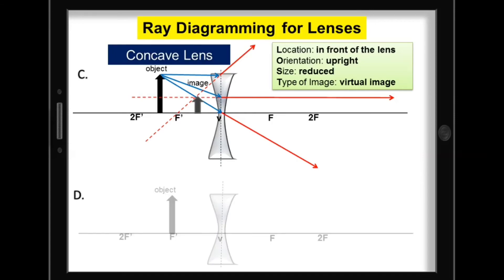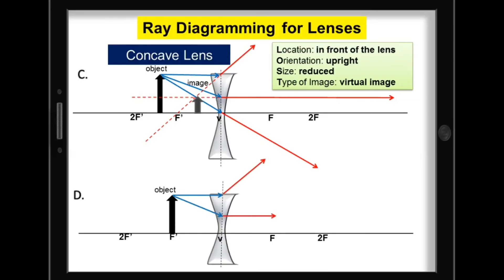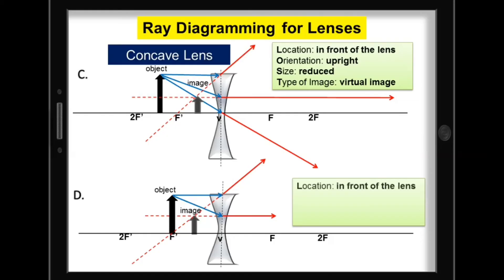For D, where the object is located at F, let's use the PF ray and the FP ray. Since the refracted rays did not merge behind the lens, we can extend the refracted rays in front of the lens. Notice the merging of the virtual refracted rays. To describe the image: the location is in front of the lens; orientation, upright; size, reduced; and the type of image, virtual image. We can conclude that the distance of the object from the concave lens does not affect the type of image formed — it's always virtual and reduced in size.